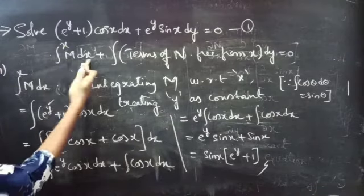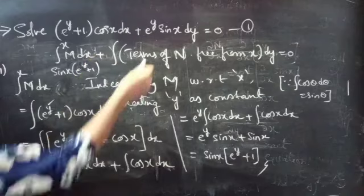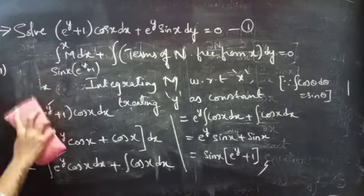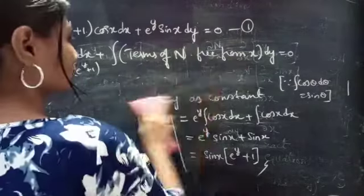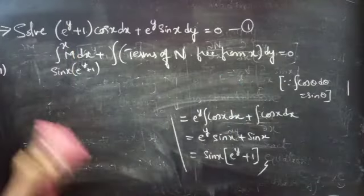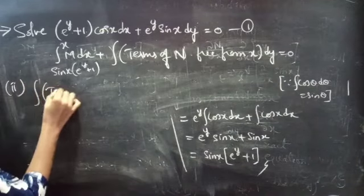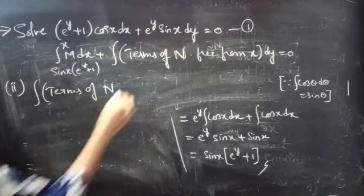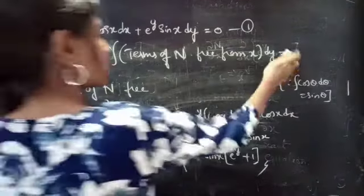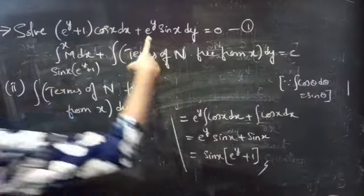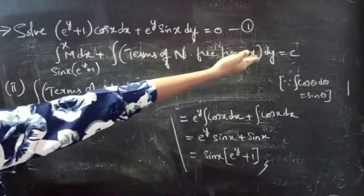So the integral over x of M dx is sin x into e power y plus 1. Now we will find the second part: the integral of terms of N free from x into dy. The general solution of equation 1 is given by the integral over x of M dx, plus the integral of terms of N free from x into dy, equals to c.